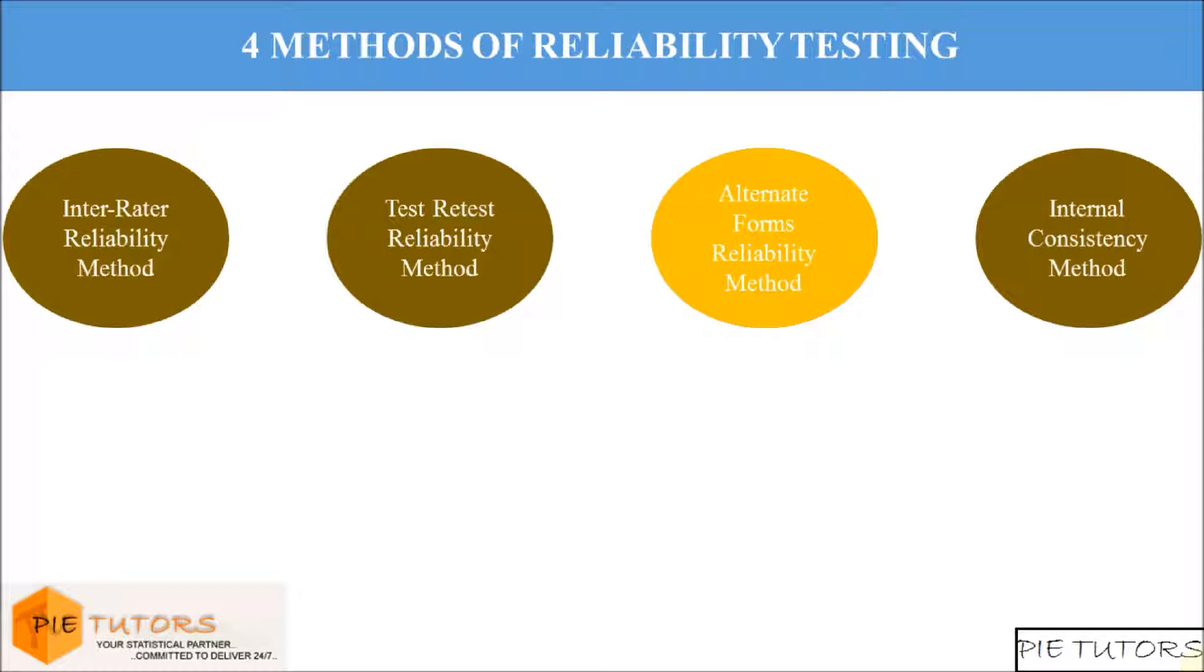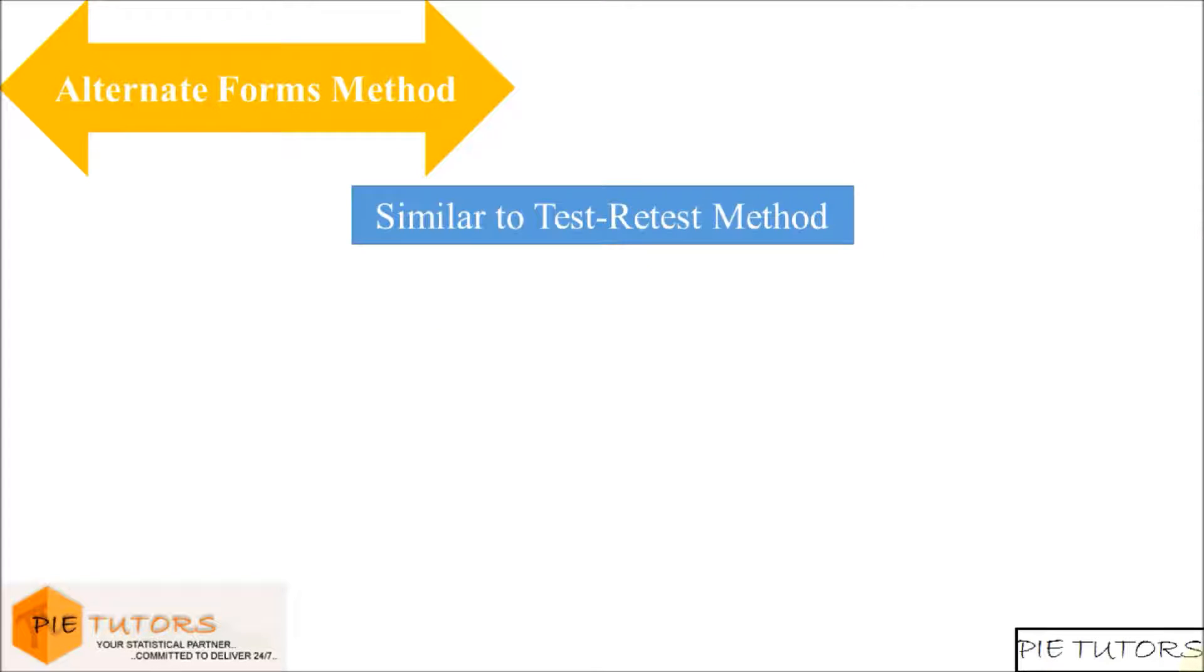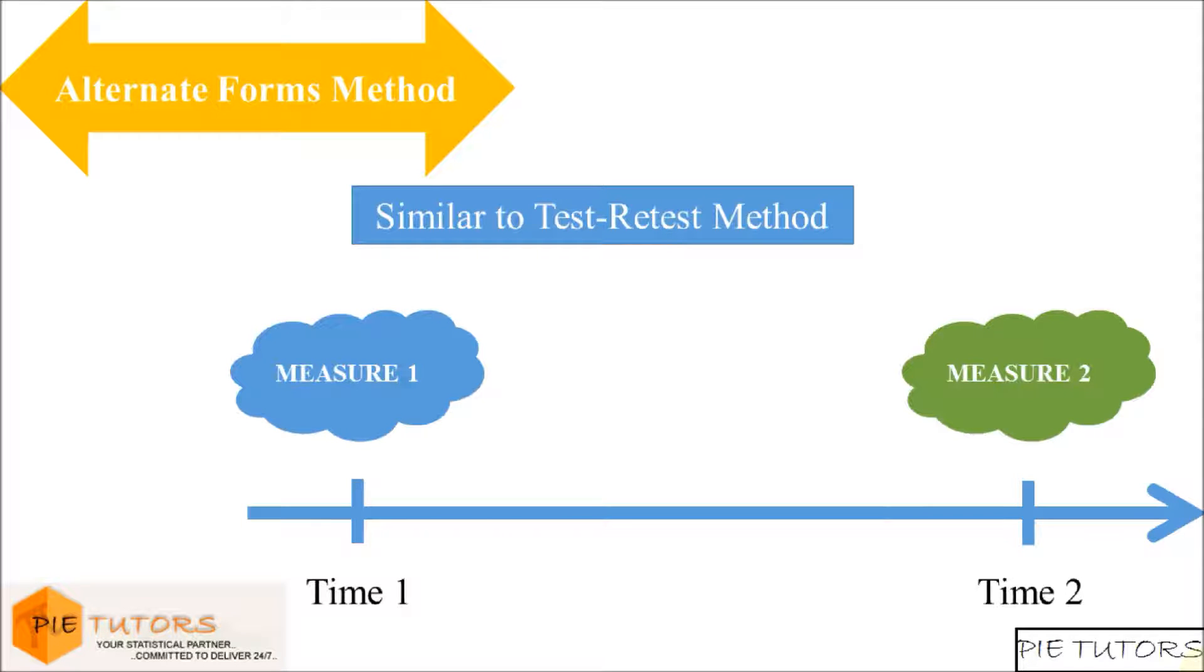Alternate forms method is another method to assess the reliability of a measure. Alternate forms method of reliability assessment is similar to the test-retest method, except that different measures are used at different time points.